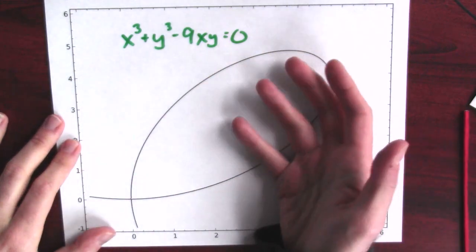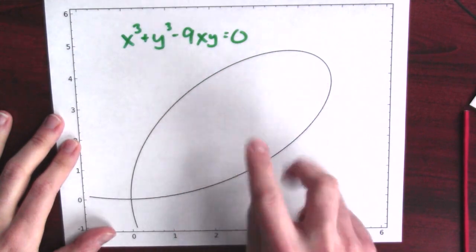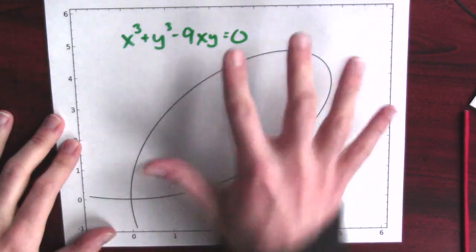This is not the graph of a function. It's really a relation. X cubed plus y cubed minus 9xy is a polynomial in two variables, in both x and y.